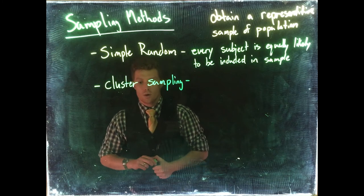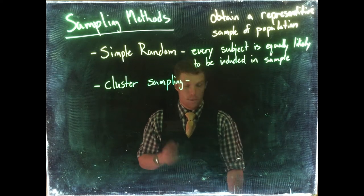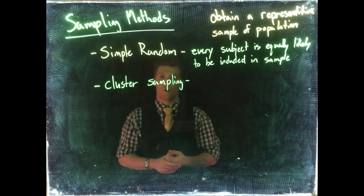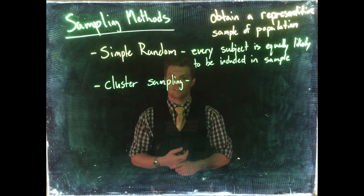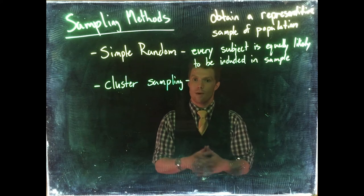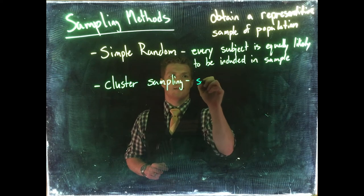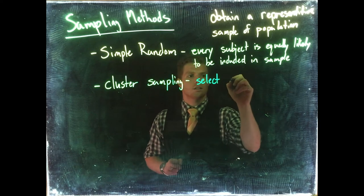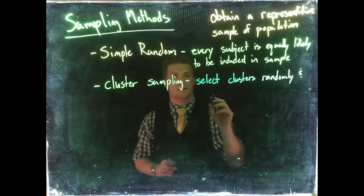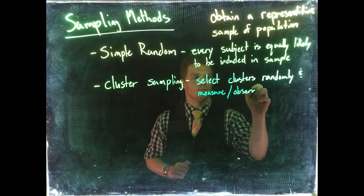Cluster sampling: let's say maybe it was hard for us to figure out who all the students were, it was hard for us to get that big list, but we did know all of the classes at Casper College. So what we would do is randomly select 15 classes, and then we would gather the data from everybody inside those randomly selected classes. So this would be select clusters randomly and measure or observe all within.